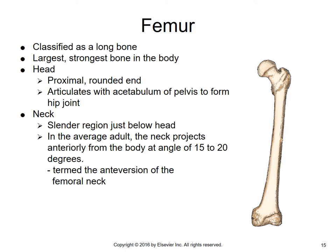Moving on to the femur: the femur is a long bone — in fact, it's the longest, strongest bone in the body. It has a head, which is its rounded end, and this head fits into a cup-shaped socket called the acetabulum, which we'll learn about when we talk about the pelvis. The head of the femur fitting into the acetabulum forms the hip joint. Moving distally, we've got the neck area — the slender region just below the head. In the average adult, the neck of the femur projects anteriorly from the body at an angle of 15 to 20 degrees, referred to as the anteversion of the femoral neck.